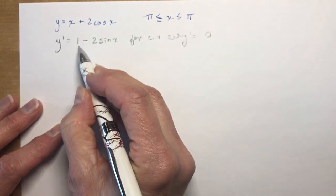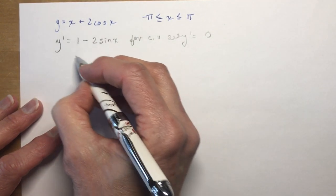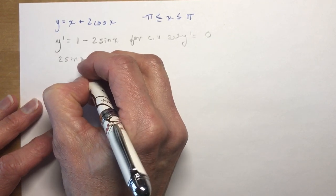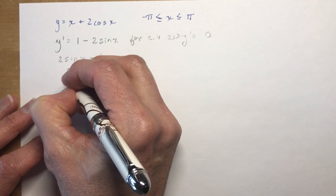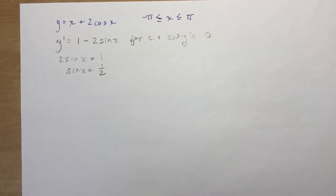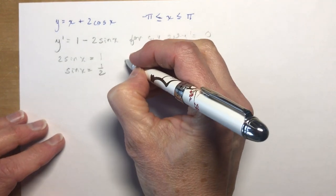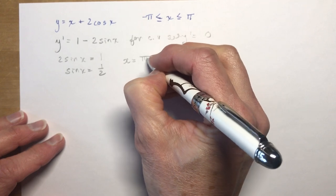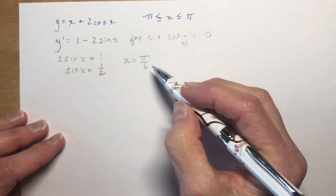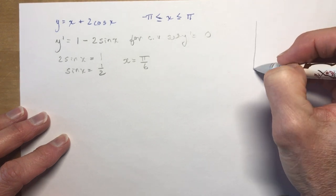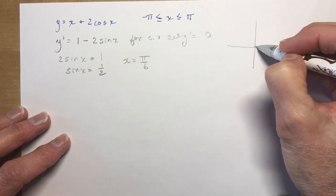For critical values we set y prime equal to zero: 1 minus 2 sin x equals 0, so 2 sin x equals 1, meaning sin x equals 1/2. You should know that well from advanced functions — that means x is going to be π over 6 as the related acute angle.